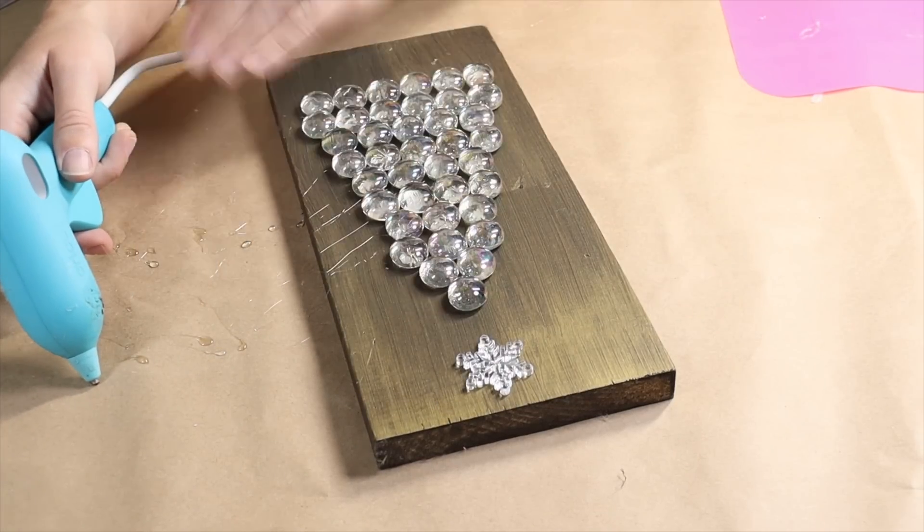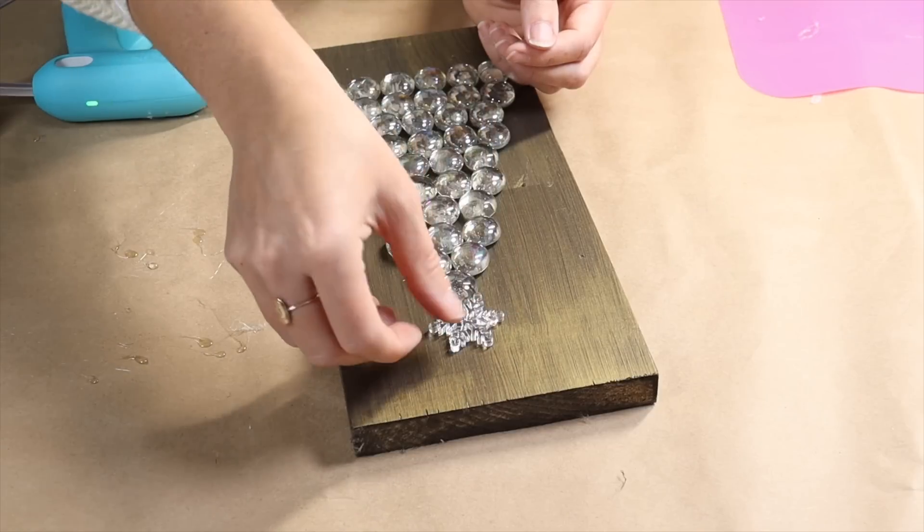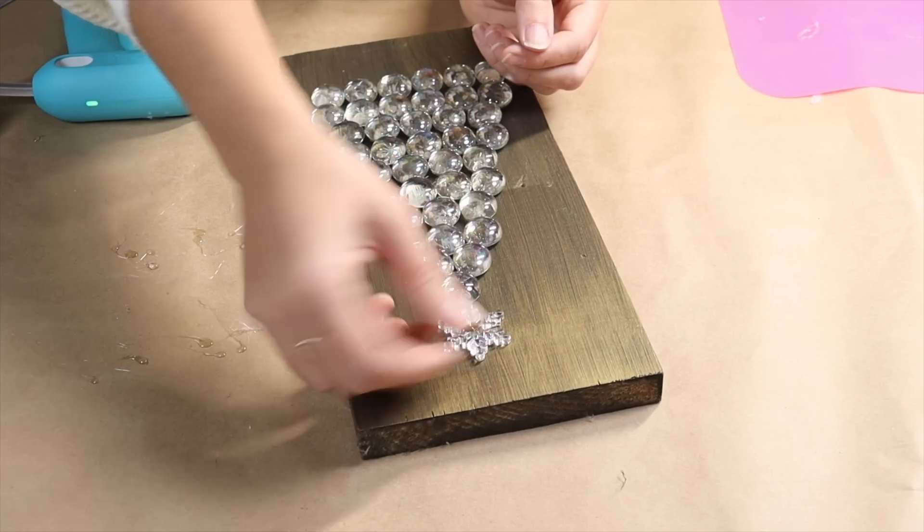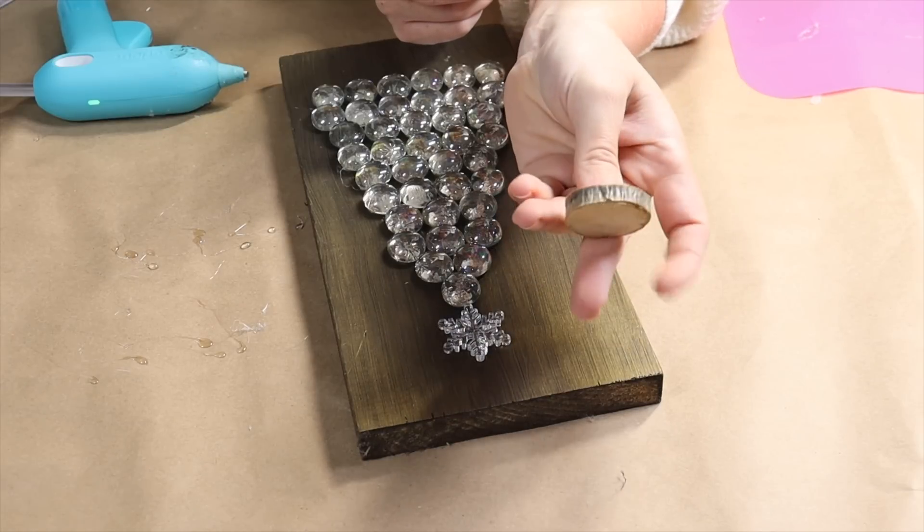I'm just using regular hot glue to glue the glass beads down and then making sure I pull away any hairs from the glue gun. Then I'm going to glue my plastic snowflake in the top as well with some hot glue.